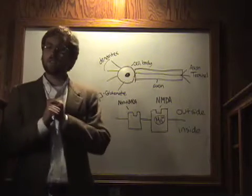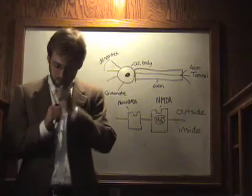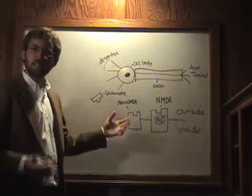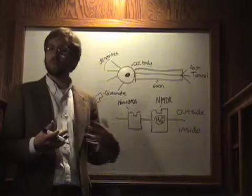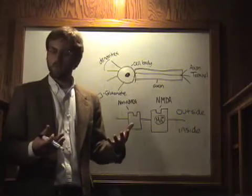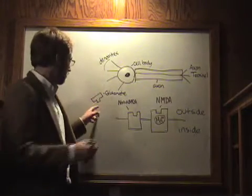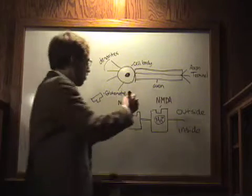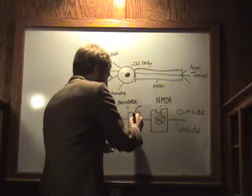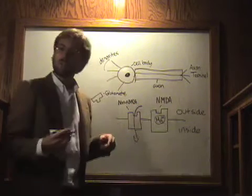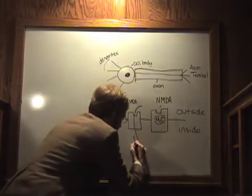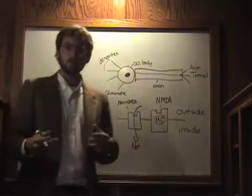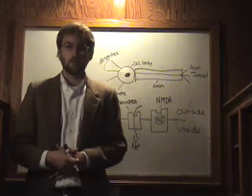Now glutamate binds to two different receptors in the brain. One is a non-NMDA receptor. This is a plain receptor, just like the normal receptor-gated channels that we dealt with before. So glutamate can come in here, bind to the non-NMDA receptor, and this opens up a channel so that sodium can enter the brain. Okay, pretty normal stuff. We dealt with that already.